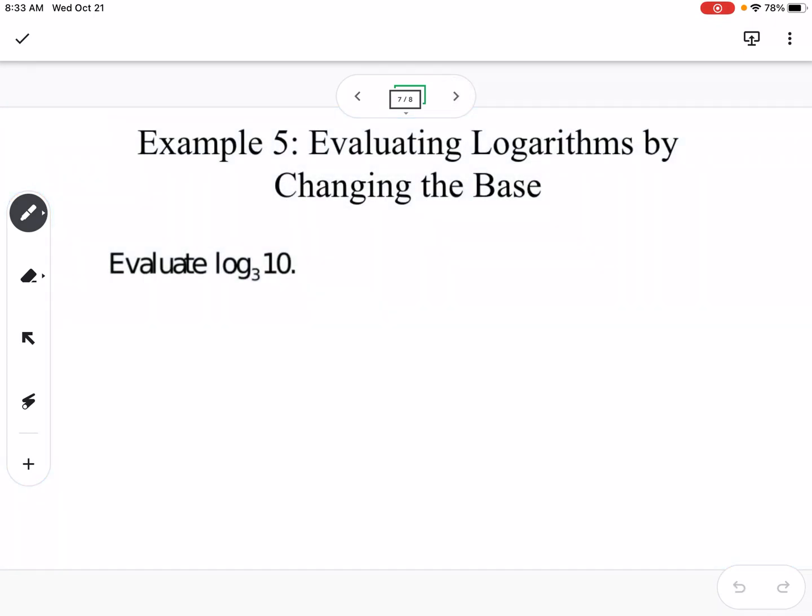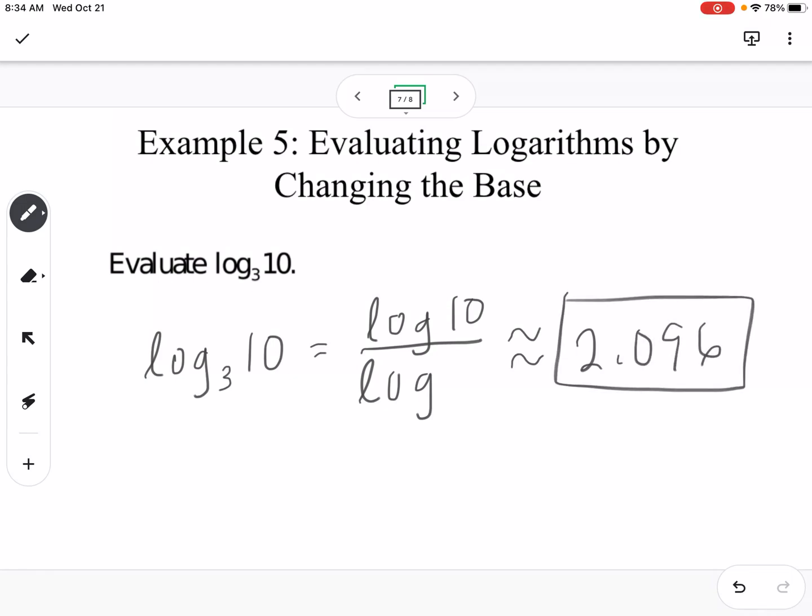So our next example is to evaluate log base 3 of 10. So log base 3 of 10 using change of base would be log of 10 over log of 3, which is approximately equal to 2.096. Now you could also try that out with natural log. So type in natural log of 10 divided by natural log of 3. And you should also get 2.096.